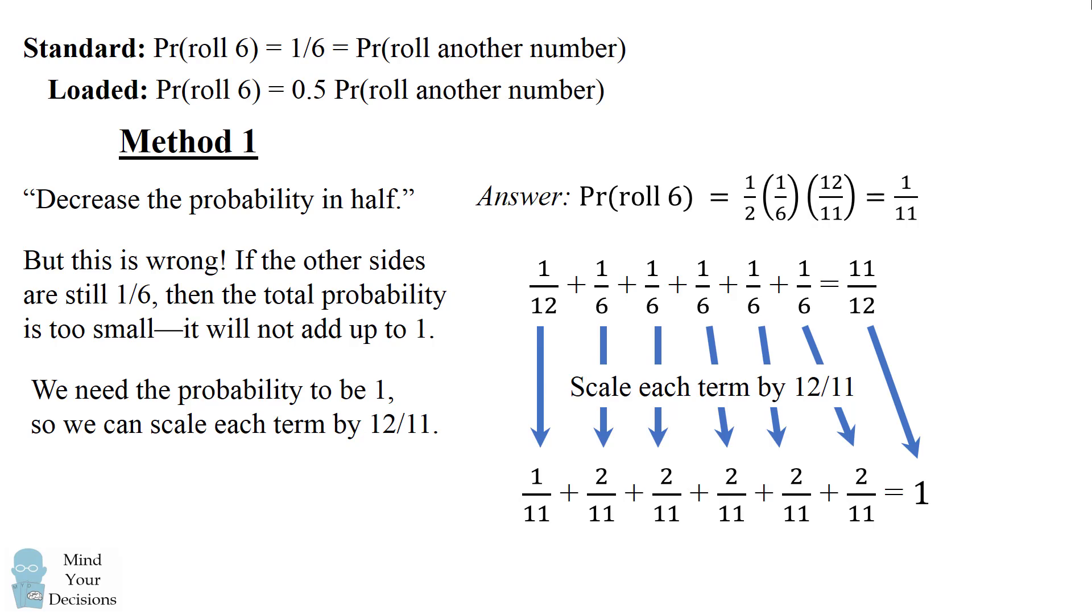But the lesson here is that you can't simply adjust one probability. If you decrease the probability of rolling a 6, you have to compensate by adjusting all the other probabilities.